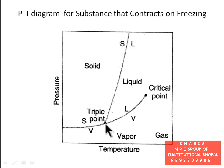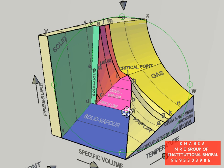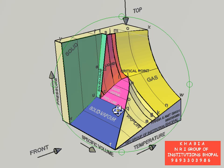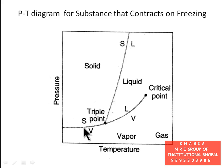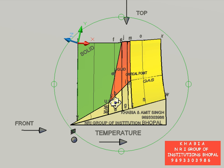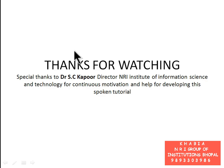The triple point in the PT diagram appears as a triple line in the PVT surface model, because at the triple point pressure and temperature are fixed while specific volume varies depending on the proportion of each phase. The sublimation line in the PT diagram appears as a surface RQUV in the PVT surface model. There is more to cover but due to time limits for this spoken tutorial, we stop here. Thanks for watching.